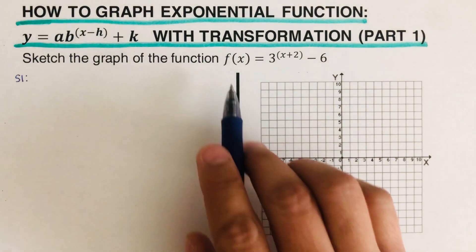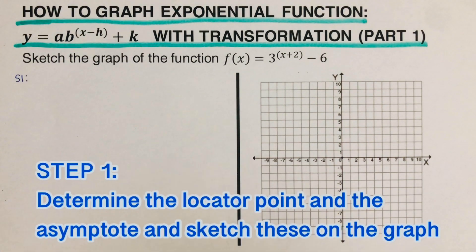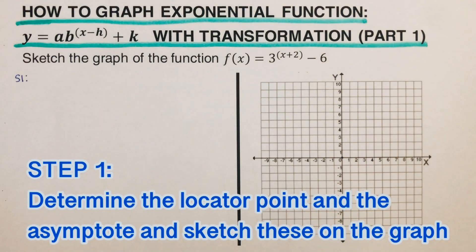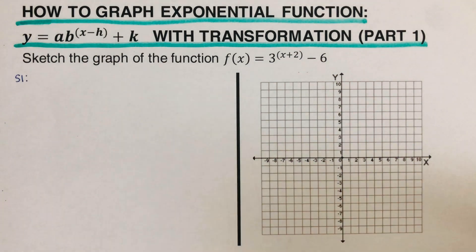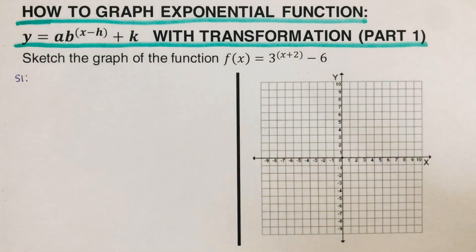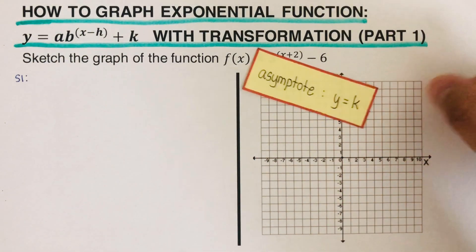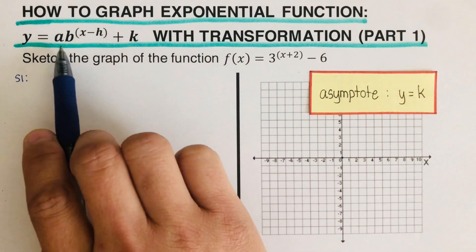The first step is to determine the locator point and the asymptote, and sketch these on the graph. For this general exponential equation, we always remember that the asymptote is equal to the value of k.